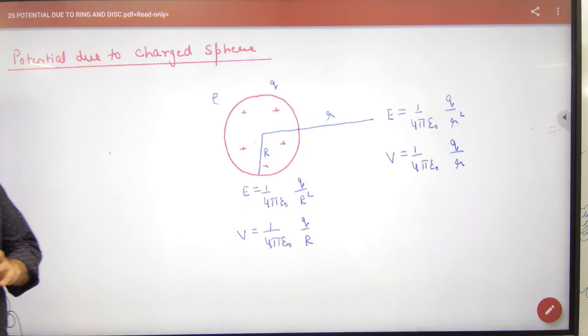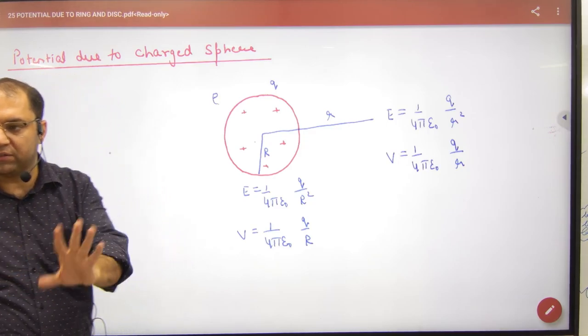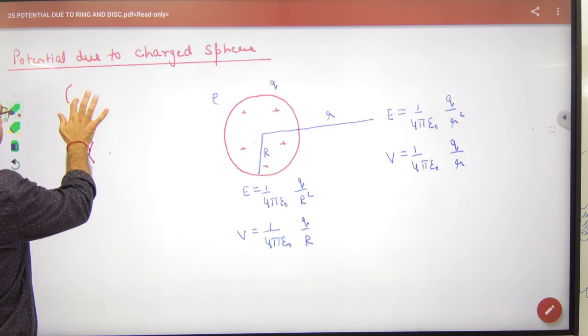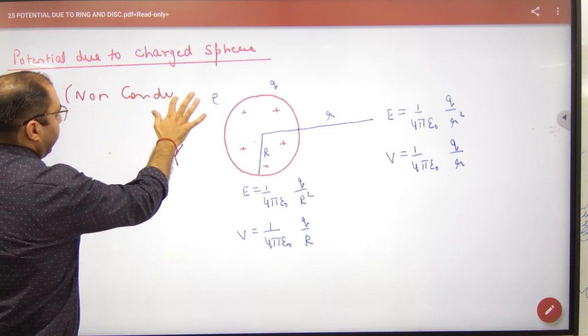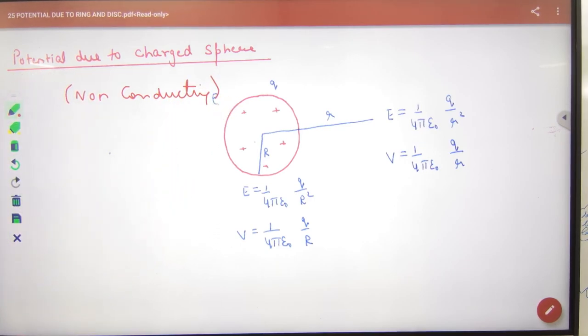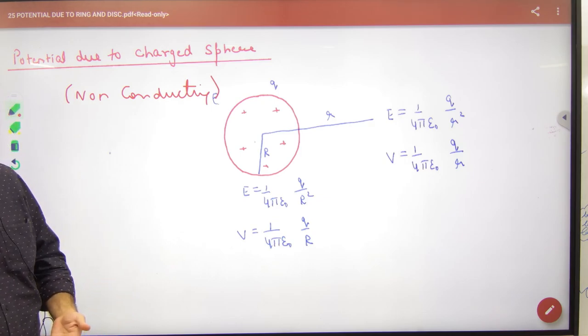Potential due to charged sphere. Write in bracket non-conducting. This can't be a conductor, so this is basically non-conducting. Why? Because any conductor can't be charged, it is non-conducting. Clear? Here, in this case, non-conducting volume distribution of charge.